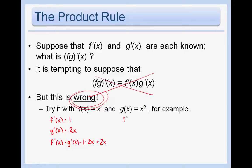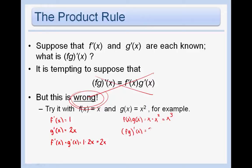Now let's see what f of x times g of x is. That would be x times x squared, in other words x cubed. So if we first multiply the two functions and then take the derivative of that, we would get, using the power rule, 3x squared. Clearly, these are not equal.